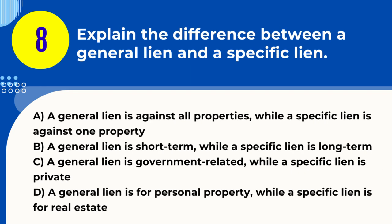Question 8. Explain the difference between a general lien and a specific lien. A. A general lien is against all properties, while a specific lien is against one property. B. A general lien is short-term, while a specific lien is long-term. C. A general lien is government-related, while a specific lien is private. D. A general lien is for personal property, while a specific lien is for real estate. Answer: A. A general lien is against all properties, while a specific lien is against one property.